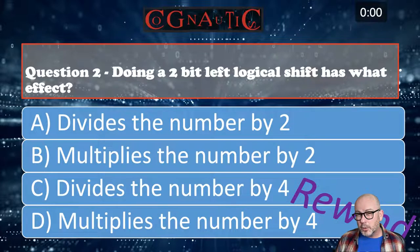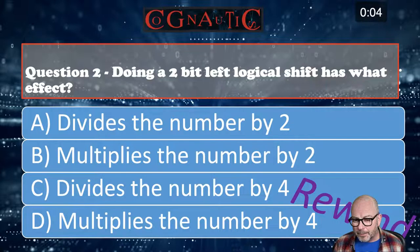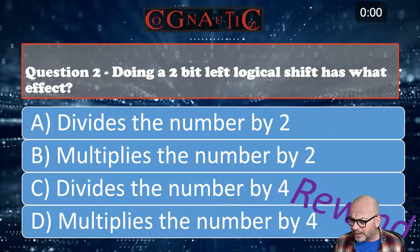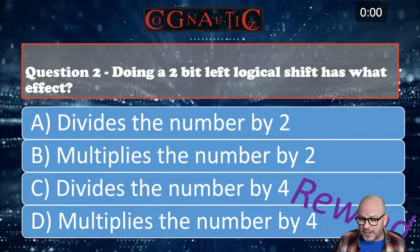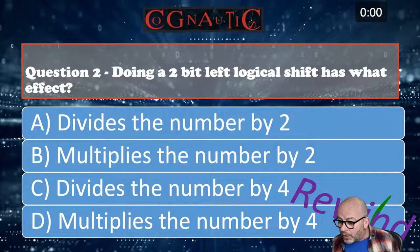What about this one - if you look at it analytically and take your time you might figure this one out. Doing a two-bit left logical shift has what effect? We've got most people going for B - multiplies by two. But when I say 'interesting' about D, what I'm actually trying to say is that D is the right answer. Let me explain why - the intuitive answer is two because it's a two-bit move, but think about bits: it goes two, four, eight, sixteen. If you do two bits it's going to be four, because it doubles each time.